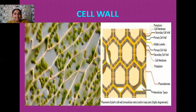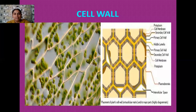The cell wall has special types of connections which are also present in the middle lamella, and these are known as plasmodesmatal connections. These plasmodesmata or plasmodesmatal connections, which are present in the cell wall and the intermediate layer middle lamella, allow the movement of cytoplasm from one cell to another — that is, the continuity of cytoplasm is maintained between two adjacent neighboring cells. The cell wall acts as a channel for cytoplasmic continuity through plasmodesmatal connections.